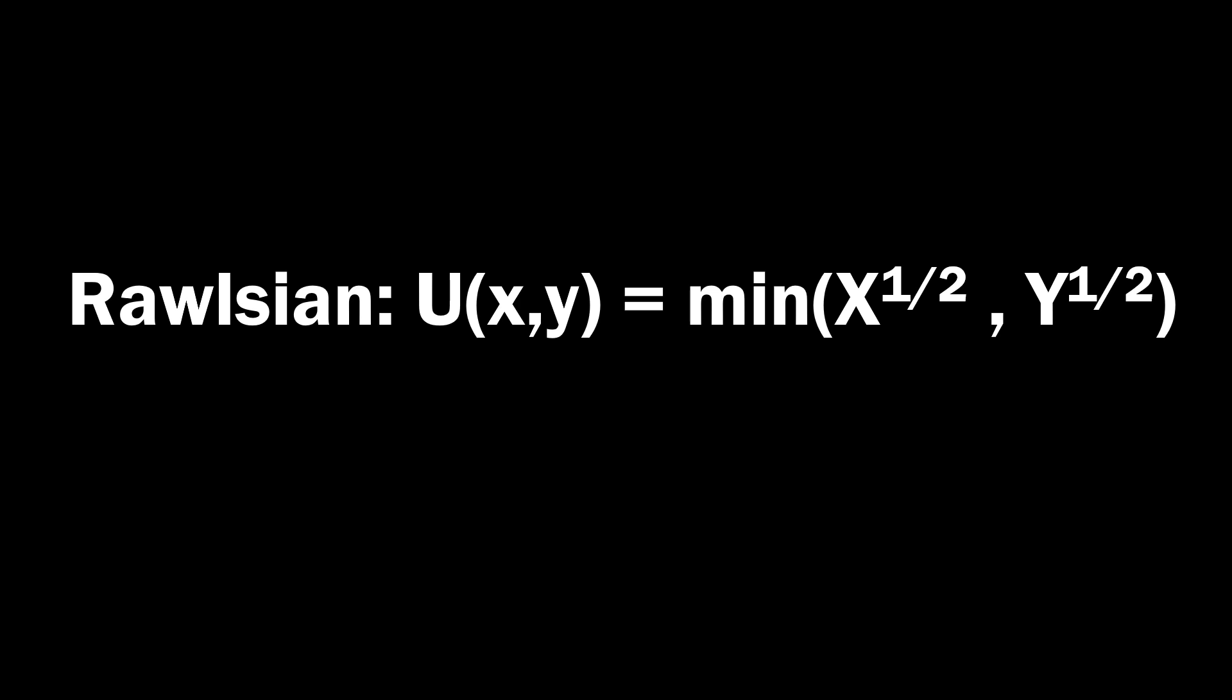So here's a Rawlsian utility function, where what we do is we maximize this equation. We're trying to maximize the minimum here. So you're trying to maximize the minimum of either X or Y. So what we do is we take the minimum of X or Y with our risk aversion built in there. That's to the one half power. We say, whichever one of those is lowest, that's the payoff that matters.